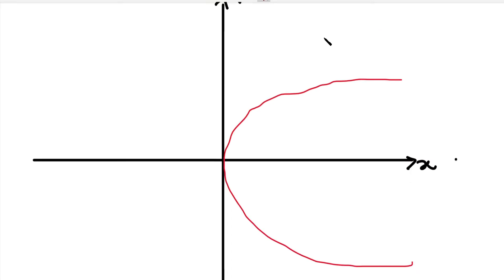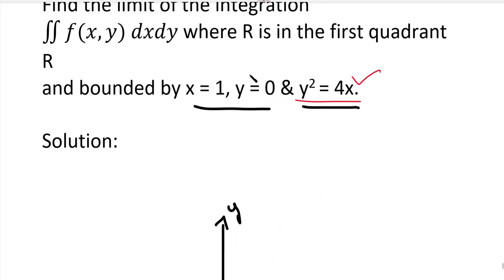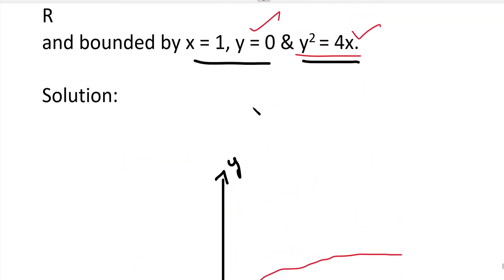So the rough diagram is noted. Next, we'll draw the line y equal to 0. y equal to 0 means the x-axis. On this line, the y value is 0, so this is the line y equal to 0. Now we'll draw the third line.